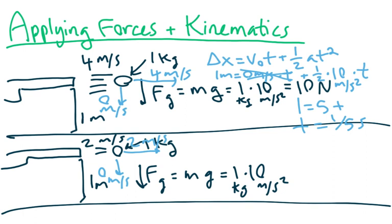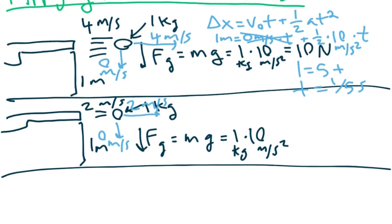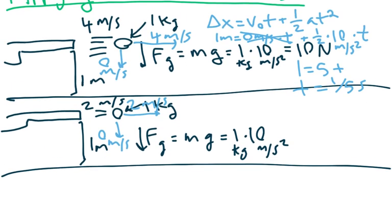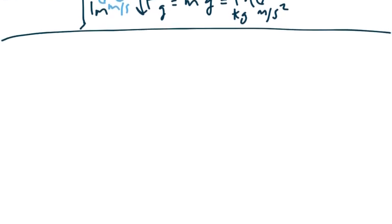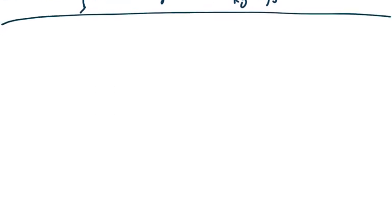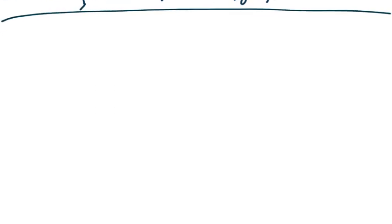This is one example of how to apply forces and kinematics together, because we used the force of gravity to find the acceleration, and the acceleration to find the time. There is another application, a little more complicated, called a projectile. A projectile is when we throw something up in the air and it comes back down. The nice thing about projectiles is that pretty much the only force acting on it is gravity.